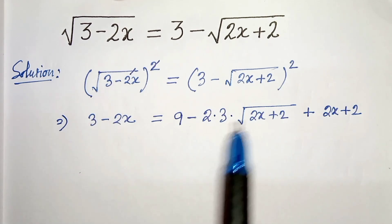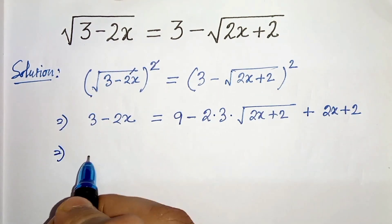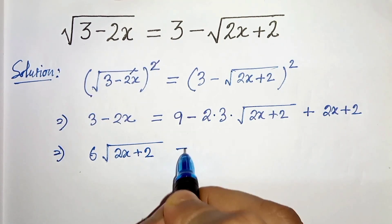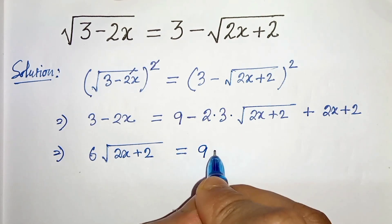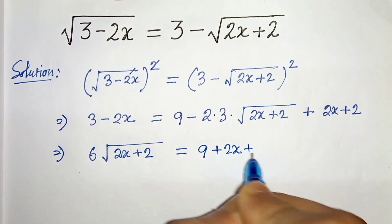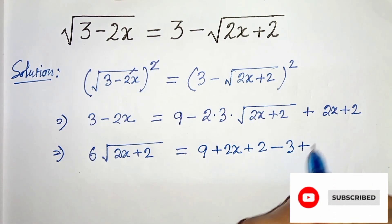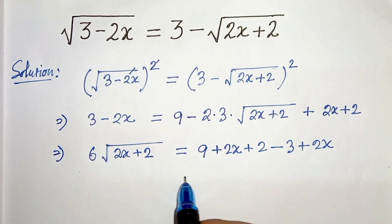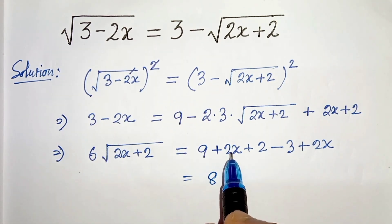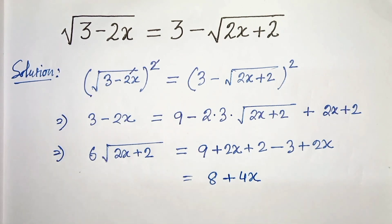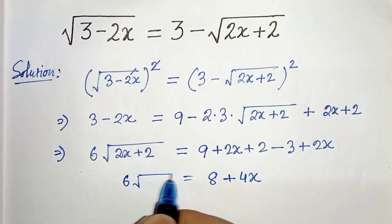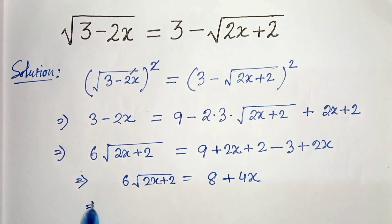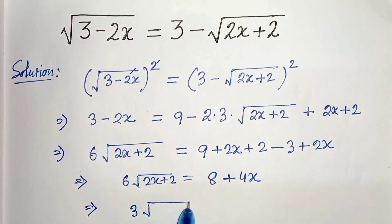Now let's take the root term to the left hand side and the remaining terms to the right hand side. So it will be 6√(2x+2) = 9 + 2x + 2 - 3 + 2x. From the right hand side we get 9 + 2 = 11, minus 3 = 8, and 2x + 2x = 4x. On the left hand side we have 6√(2x+2).